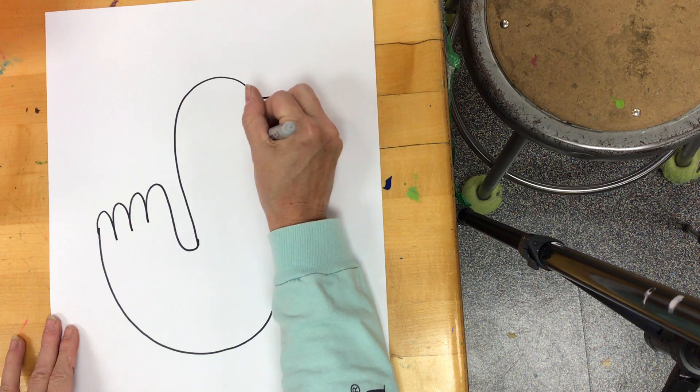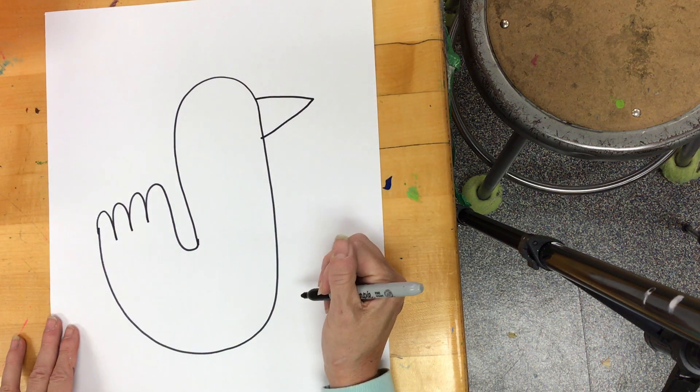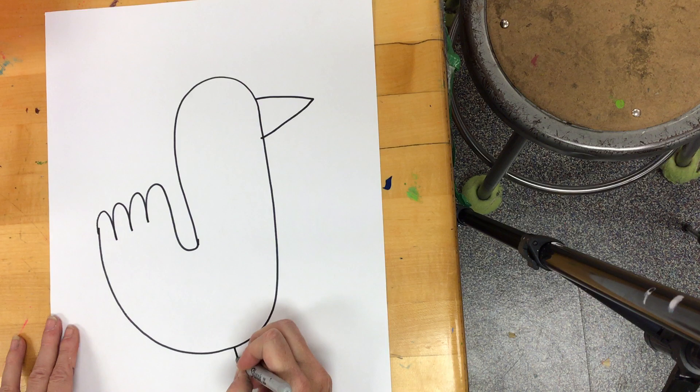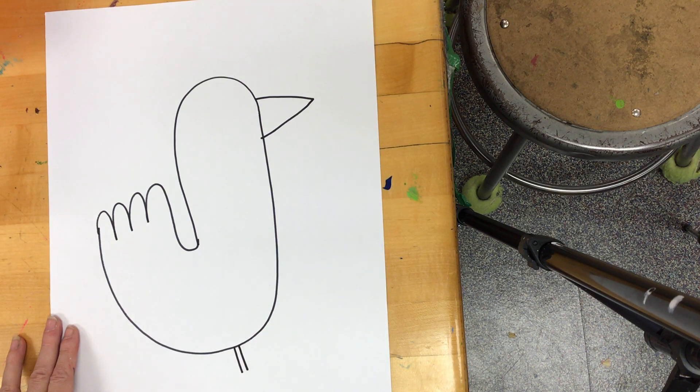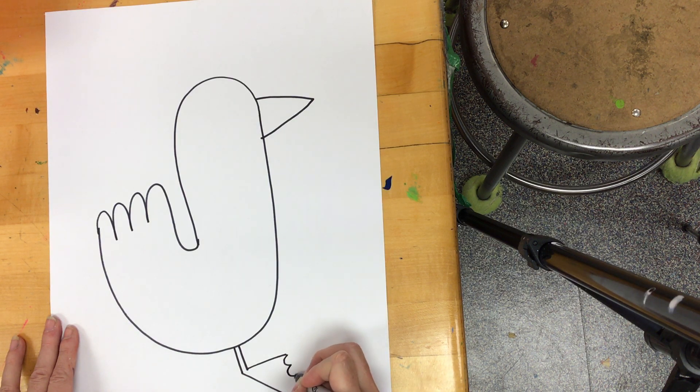My next step is going to be to give them a beak. The legs, two little rectangles. Then, I'm going to draw the letter V, and then make some U's.